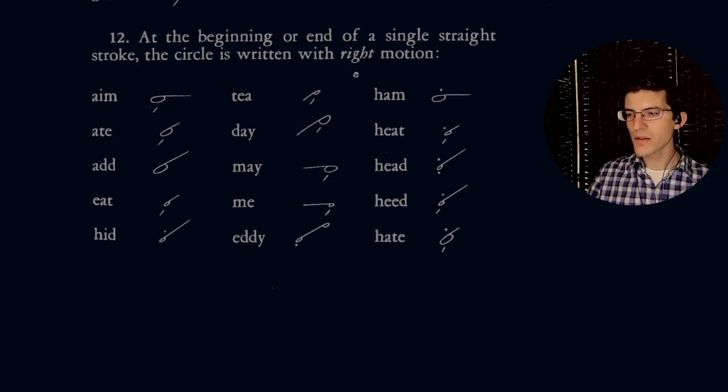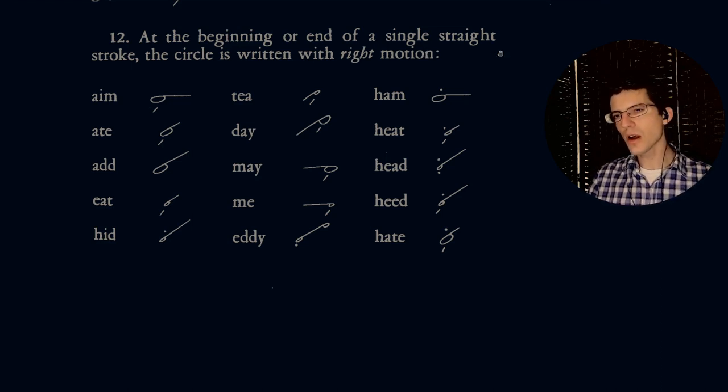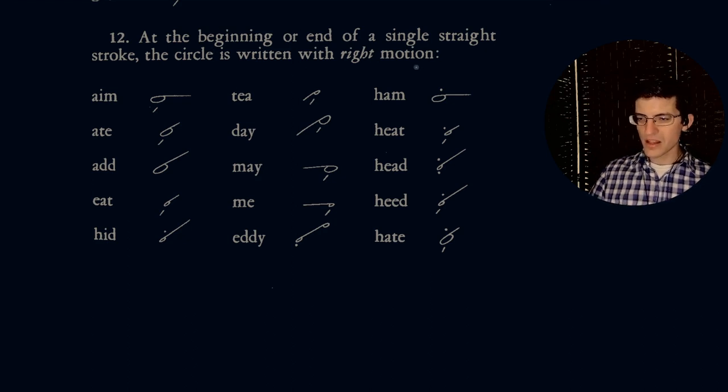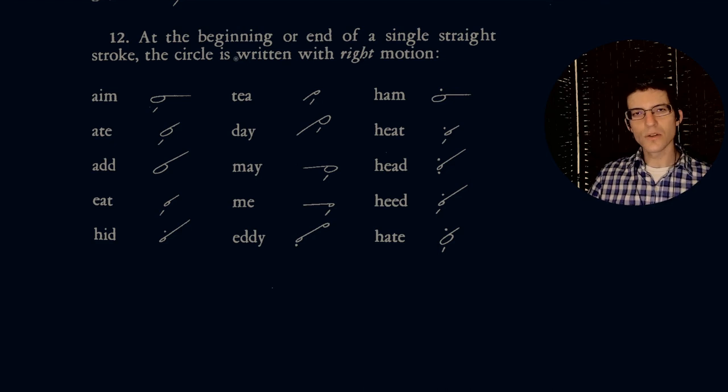Moving on to the next one, number 12. At the beginning or end of a single straight stroke, the circle is written with right motion, or the circle is written clockwise. So the word aim, for instance, A, M. The word me, M, E. The word head, H, and otherwise it just says ed. So we have H, that's the aspirate, the dot over the top, E, D, head. Once again, at the beginning or end of a single straight stroke, the circle is written with right motion, or clockwise.